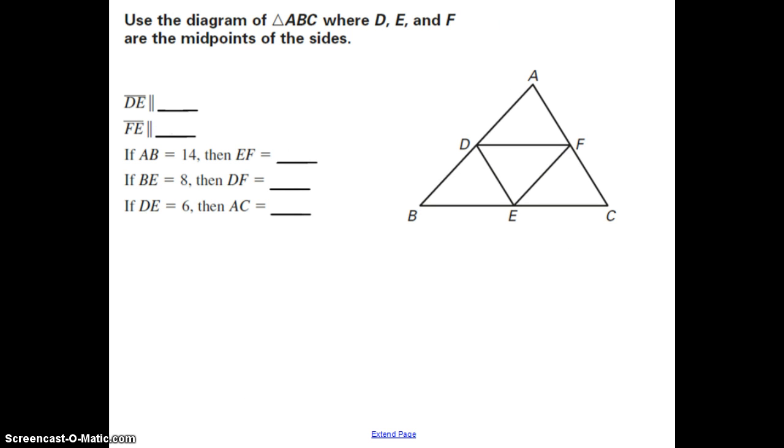In this example, it tells us to use the diagram of triangle ABC where D, E, and F are the midpoints of the sides. So D, E, and F are the midpoints. That means that D cuts segment AB in half, F cuts segment AC in half, and then E cuts segment BC in half. So those are the markings we want to make. Now the other thing that we know are the sides that are parallel. So we have here line segment DE, which is this one, is going to be, let's mark this. So we have the segment DE is going to be parallel to AC. So I'll mark here AC. And then we have line segment FE is going to be parallel to AB. So we can say that FE is parallel to AB.